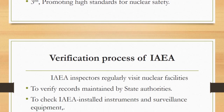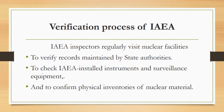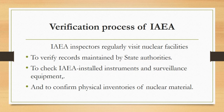Now, what is the verification process of IAEA? Under safeguards agreements, IAEA inspectors regularly visit nuclear facilities to verify records maintained by the state authorities on the whereabouts of nuclear materials under their control, to check IAEA-installed instruments and surveillance equipment, and to confirm physical inventories of nuclear materials. These and other safeguard measures provide independent international verification that governments are abiding by their commitments to the peaceful use of nuclear technology. A precondition for the implementation of safeguards is a formal safeguards agreement between the agency and the state.